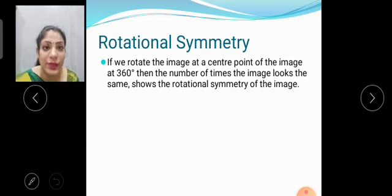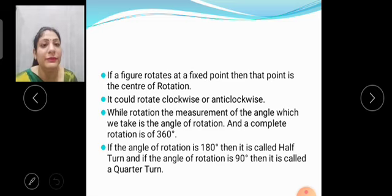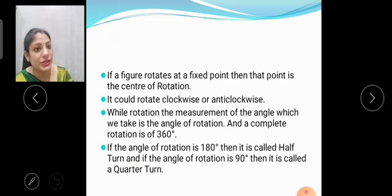Now, rotational symmetry. If we rotate the image at the center point of image at 360 degrees, then number of times the image looks the same show the rotational symmetry of an image. For example, if a figure rotates at a fixed point, then that point is the center of rotation. It could rotate clockwise or anticlockwise. While rotation, the measurement of the angle which we take is the angle of rotation and a complete rotation is of 360 degrees.